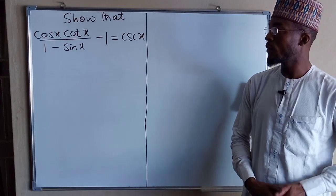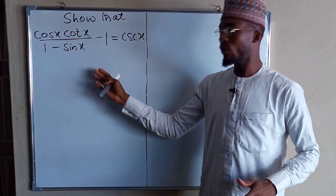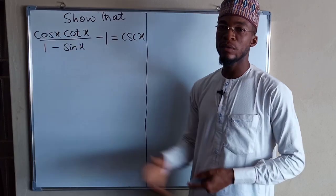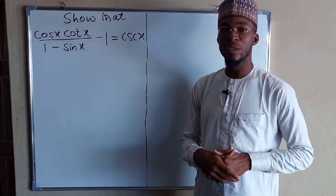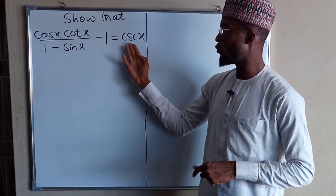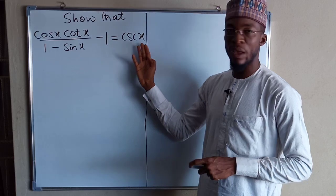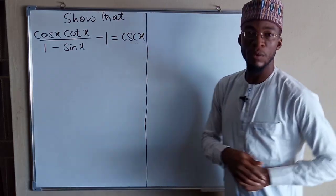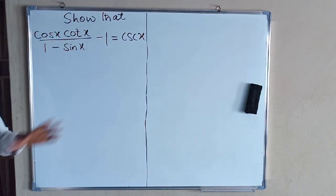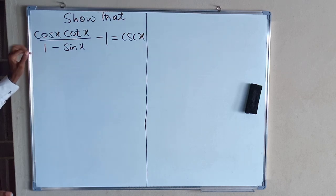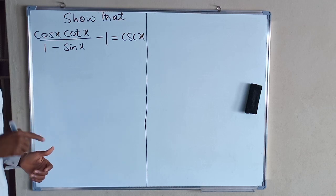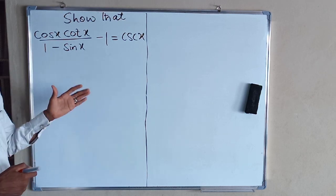Good morning. This question was sent to me through Facebook yesterday — to prove whether cos(x) multiplied by cot(x) divided by one minus sin(x), minus one, is equal to cosec(x) or not. The first thing to do whenever you are given a simplification in trigonometric ratios is to make sure each term is transformed into either cos or sine ratios.